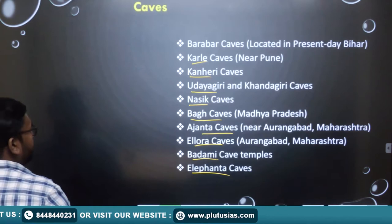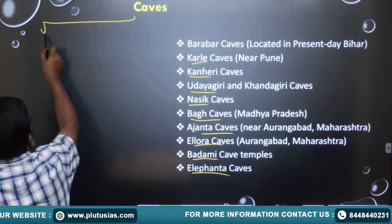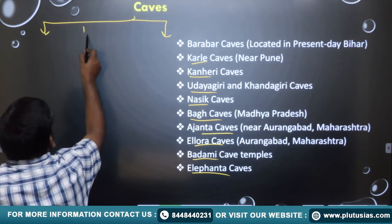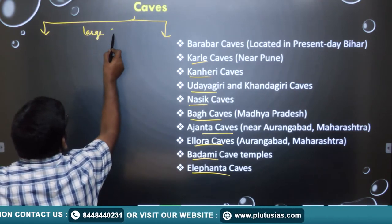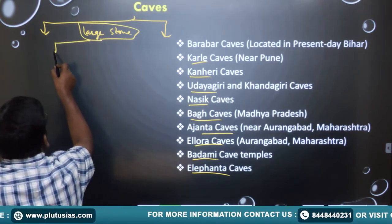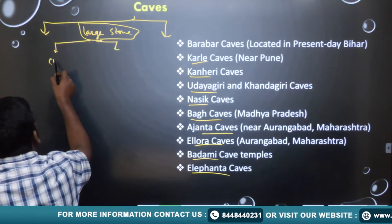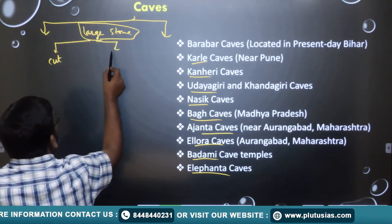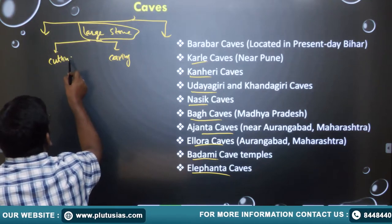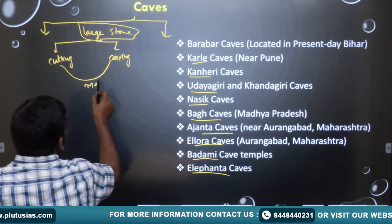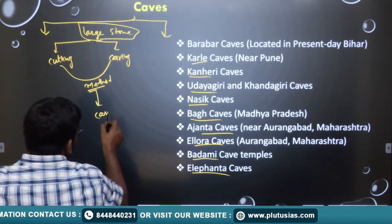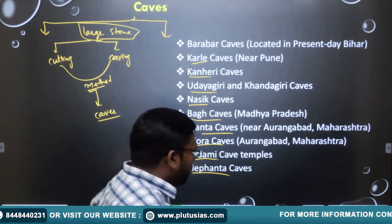The point is — how are caves made? Caves are made through two methods. There is a large stone, and it is cut through either a cutting method or a carving method. Both cutting and carving are used in order to make caves.